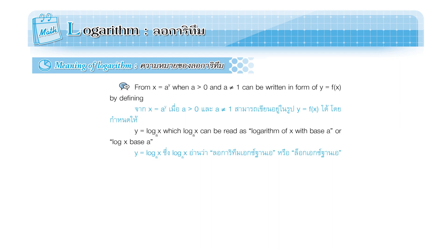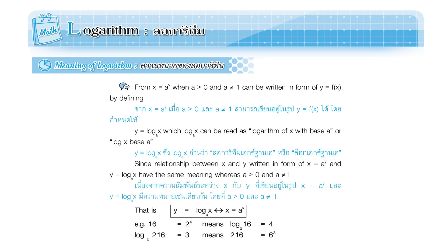From x equals a to the y power, when a is greater than 0 and a does not equal 1, this can be written in the form y equals f(x) by defining y equals log x base a. Since the relationship between x and y written as x equals a to the y power and y equals log x base a have the same meaning, where a is greater than 0 and a does not equal 1.